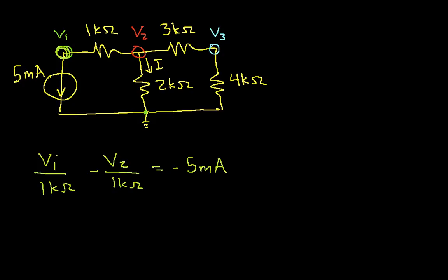Let's look at node 2. Node 2, we'll have negative v1 over 1k ohm plus v2 times 1 over 1k ohm plus 1 over 2k ohm plus 1 over 3k ohm minus v3 over 3k ohm. And this is equal to 0.